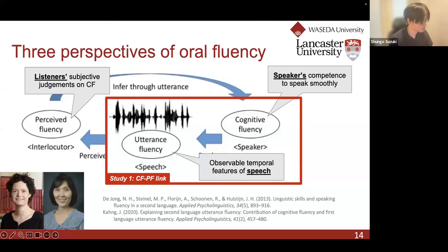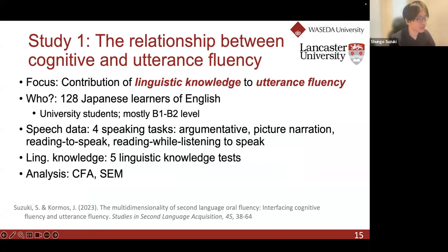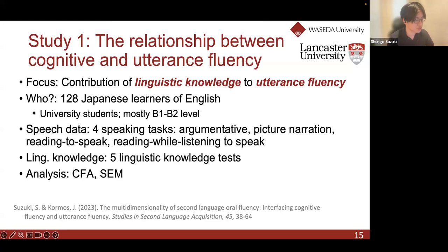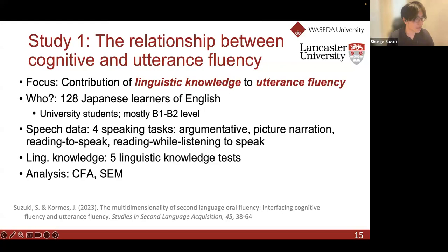To extend research on the cognitive and utterance fluency link, we examined what linguistic knowledge contributes to three dimensions of utterance fluency at the level of constructs — statistically, at the level of latent variables. That's why we used confirmatory factor analysis and structural equation modeling to control for measurement error. The dataset was collected from 128 Japanese learners of English at a university in Japan, mostly classified as B1 to B2 levels on the CEFR scale. We used four different speaking tasks because we were interested in task effects on the relationship between linguistic knowledge and speaking performance.